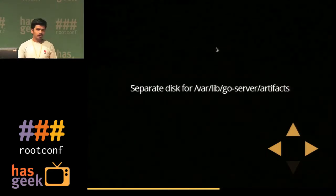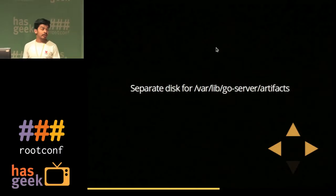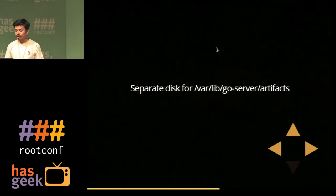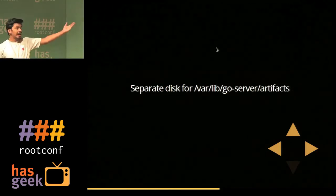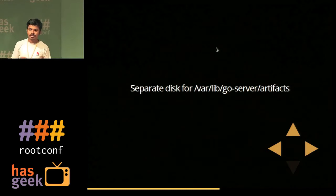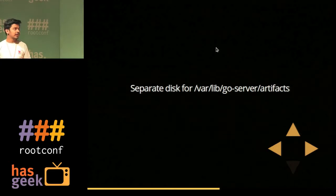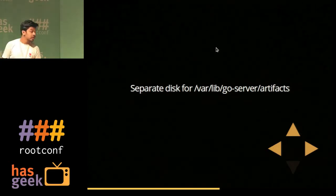Even artifacts built just a second ago can get deleted. This is why you should have a separate disk for `/var/lib/go/artifacts`, which is where artifacts are stored on the GoCD server. If a bad program is creating lots of logs on the same partition, that might also trigger GoCD to delete your recent artifacts.